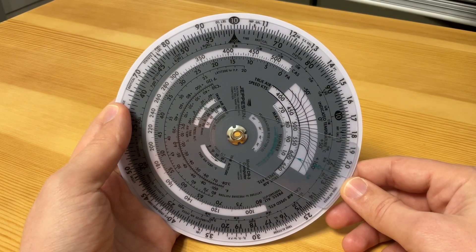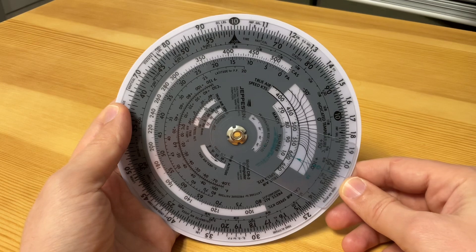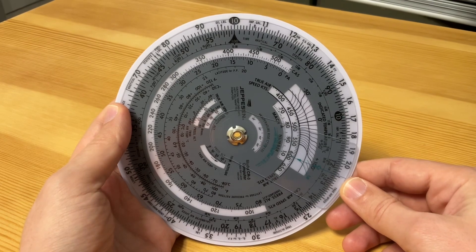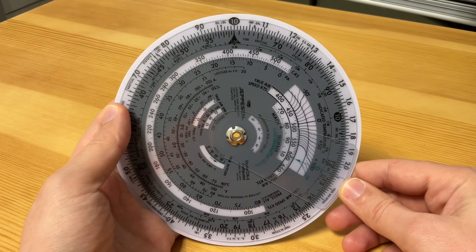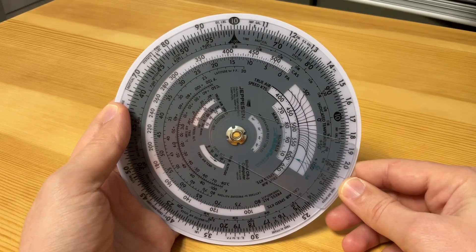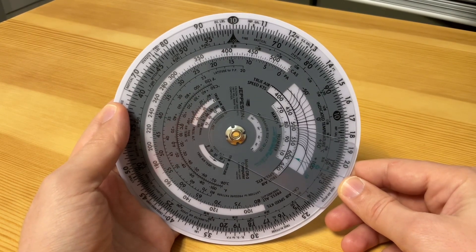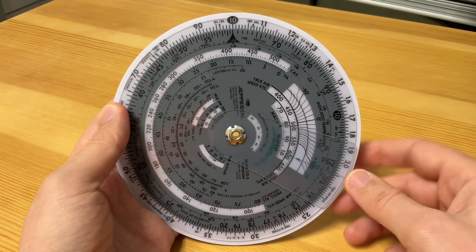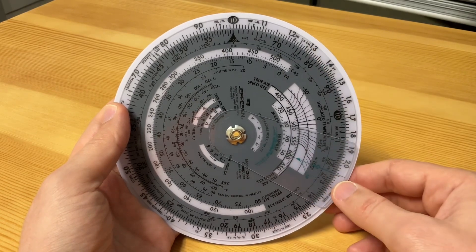If you were solving a problem involving 1,000 pounds of fuel, the number 10 would be read as 1,000, and each calibration would equal 10 pounds. The 11 would be read as 1,100 pounds.